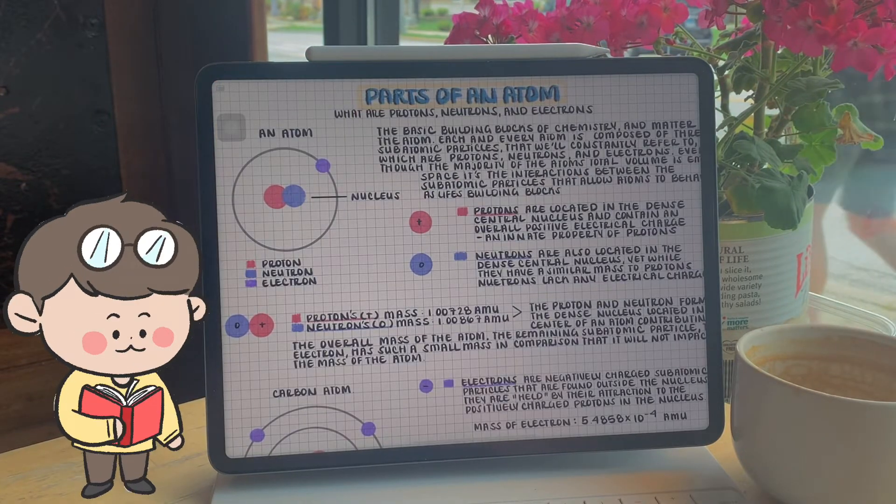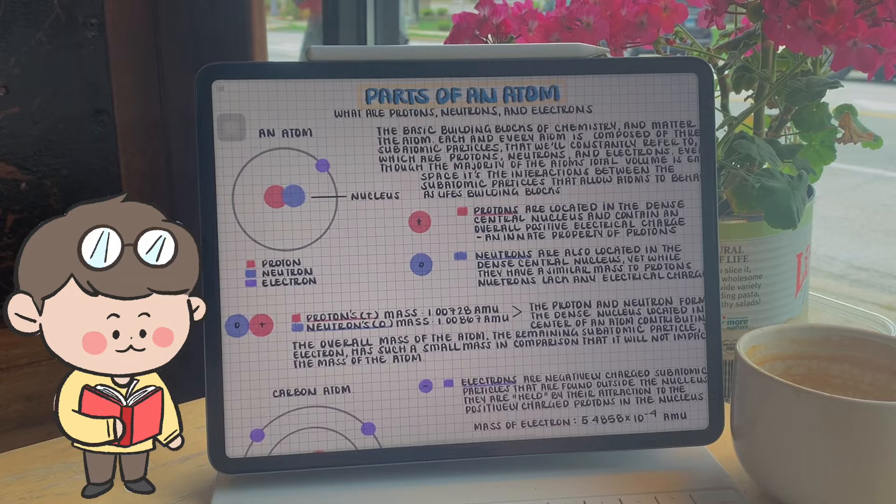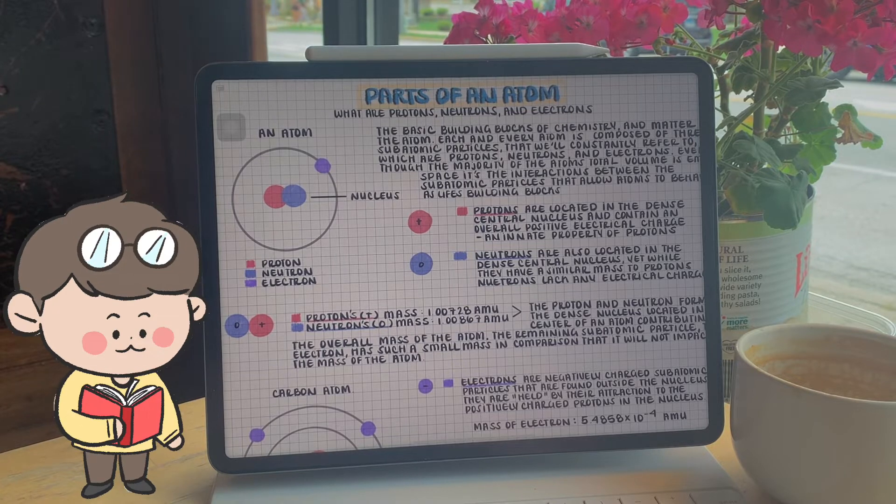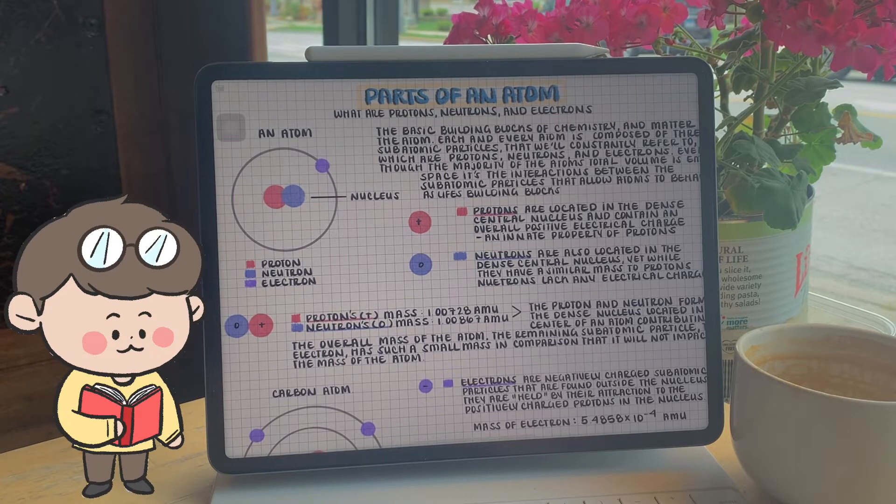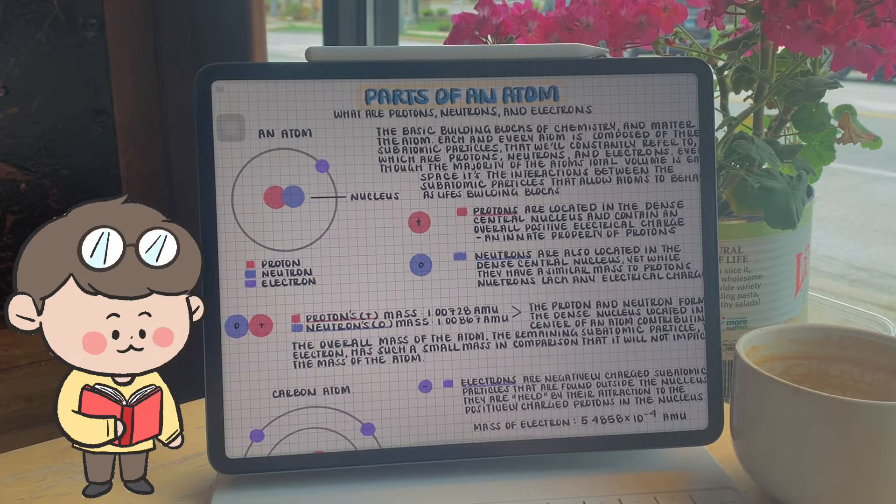Let's talk about the parts of the atom. The basic building blocks of chemistry and matter is the atom. Each and every atom is composed of three subatomic particles that we are constantly referred to,